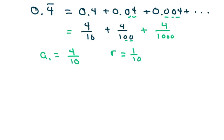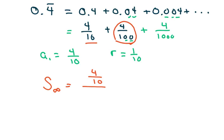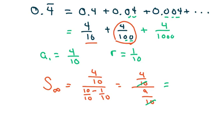Or you can just divide the current term by the previous term and you'll get 1 over 10. Using the formula, we get 4 tenths divided by 1 minus r. I always change the 1 here to 10 over 10, because that equals 1. So that's 4 over 10 divided by 9 over 10. These two cancel, so my fraction form is 4 over 9.